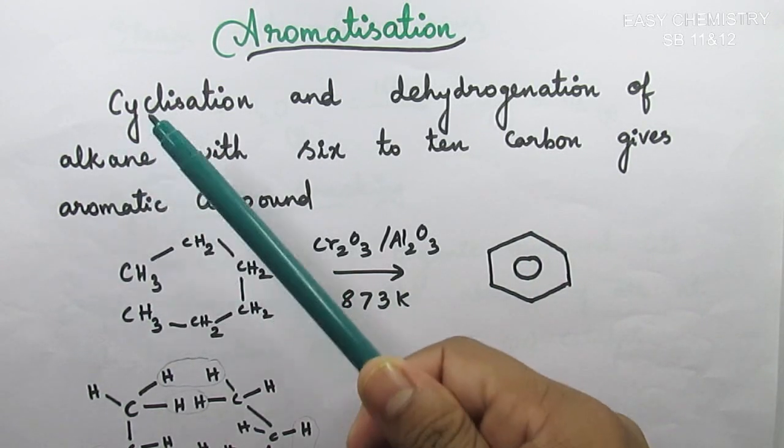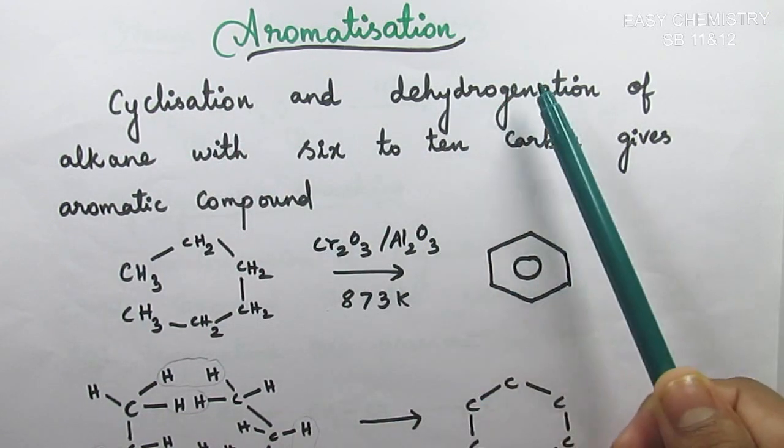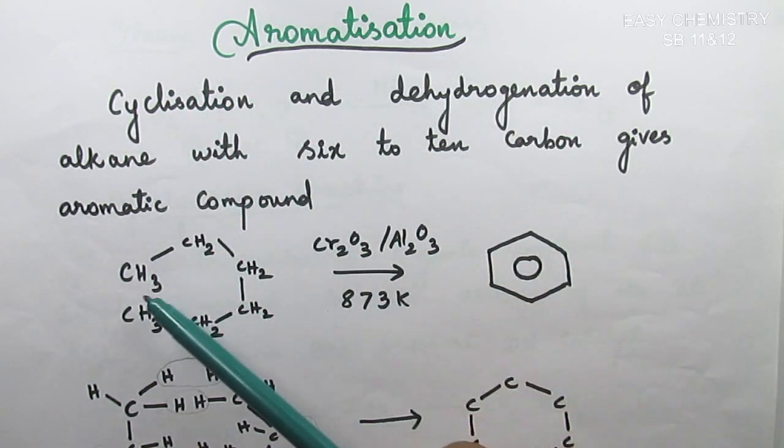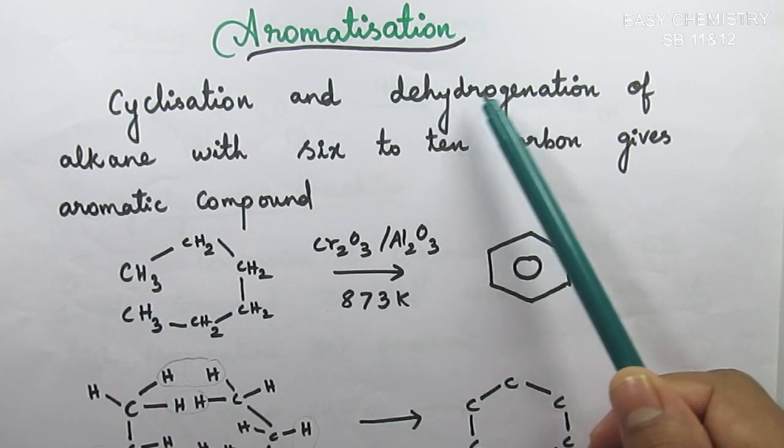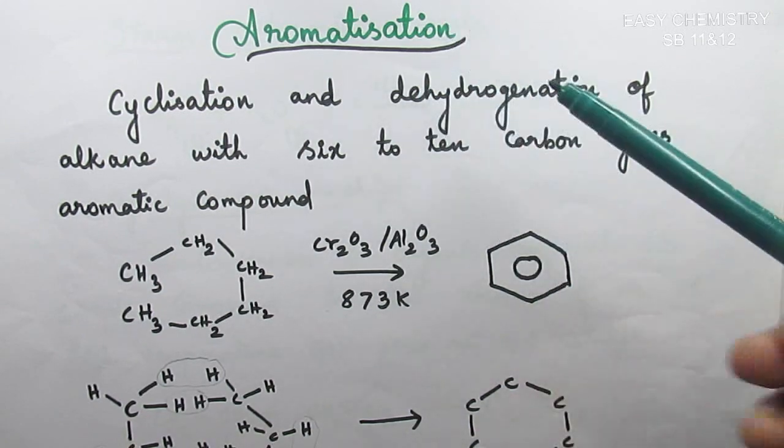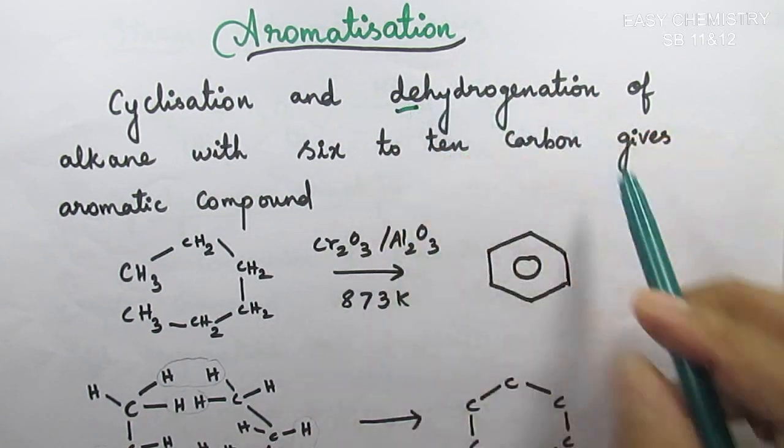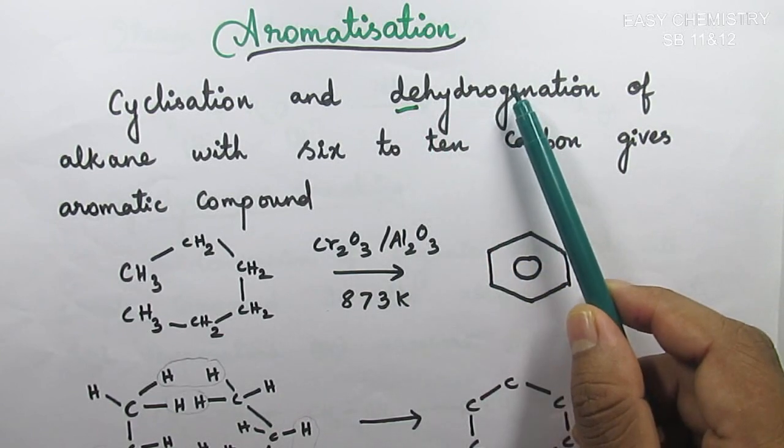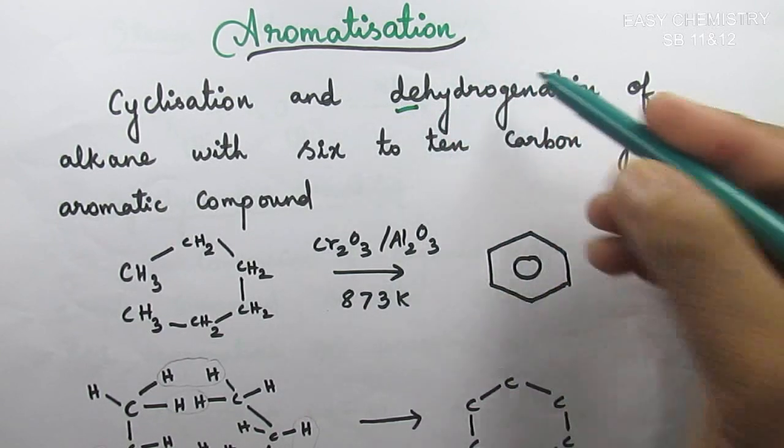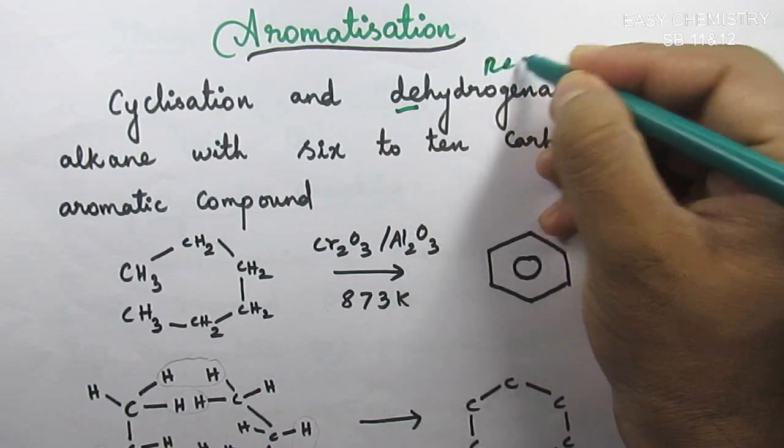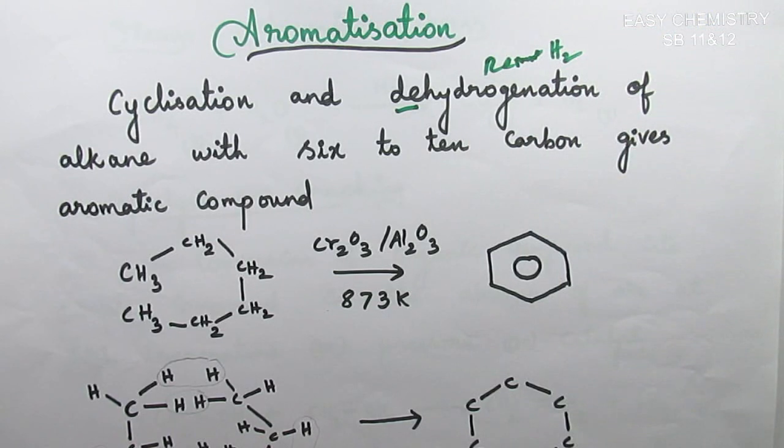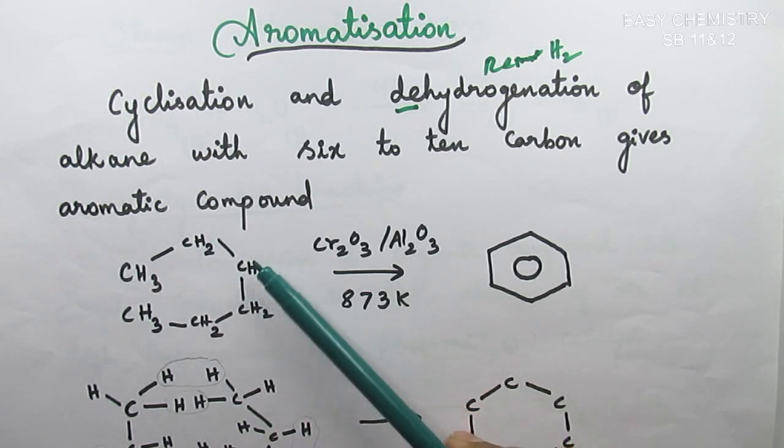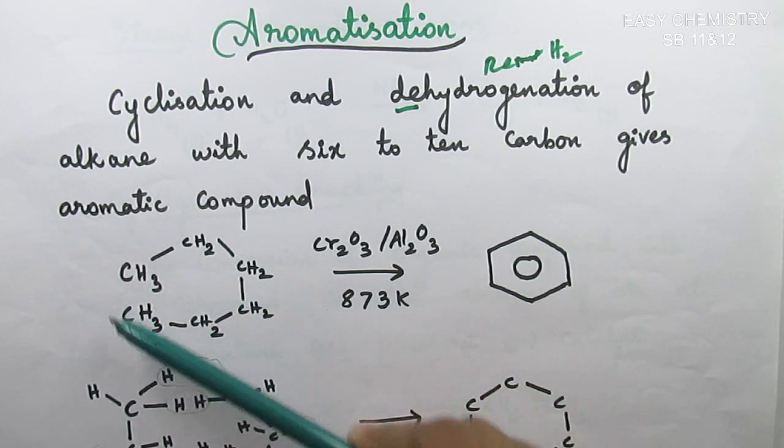In the process, cyclization and dehydrogenation. Cyclization is open chain to cyclic chain. Dehydrogenation - what's the meaning? Hydrogenation is addition of hydrogen, dehydrogenation means we are going to remove H2. Hydrogen is removed.